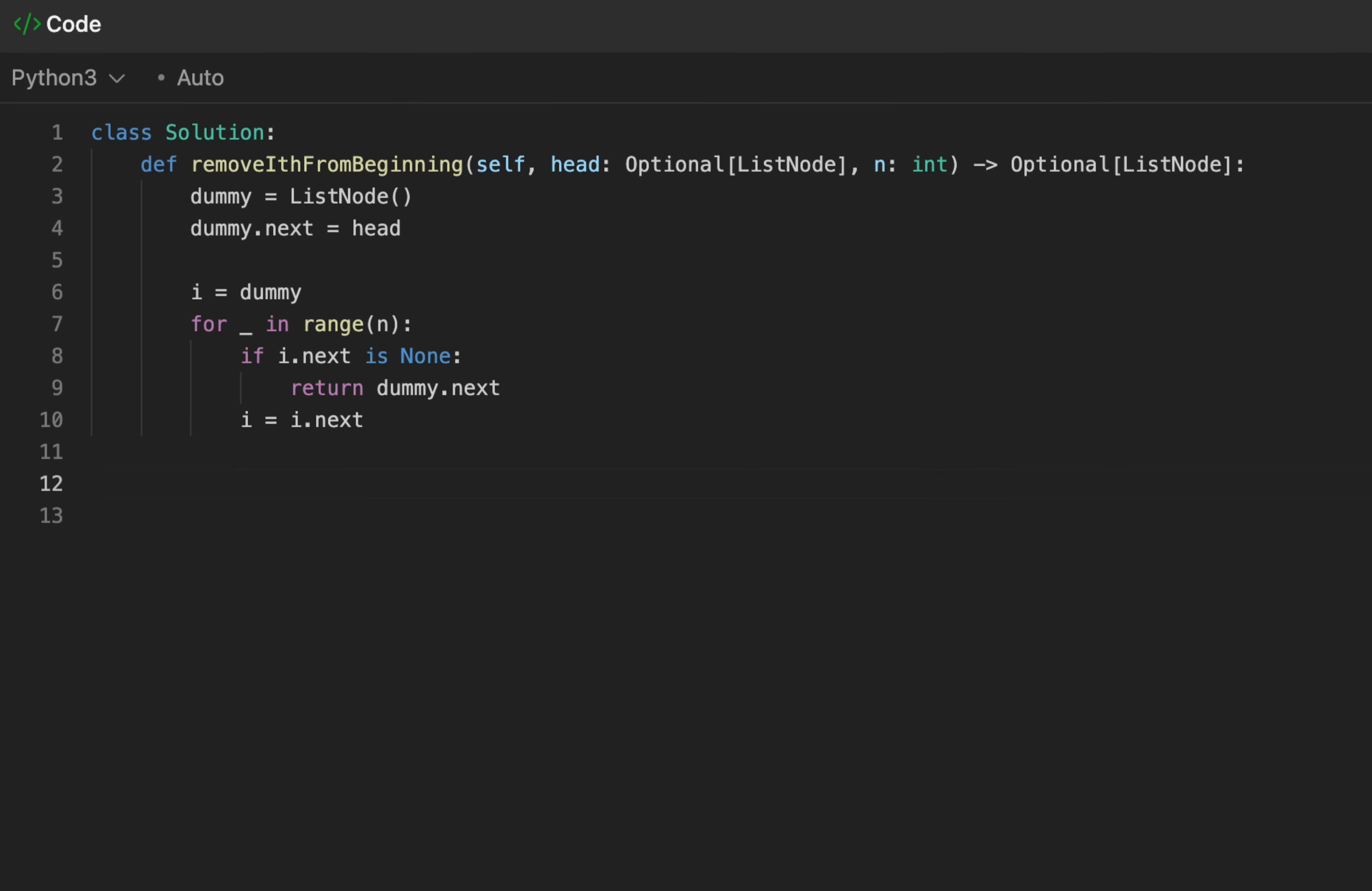After the loop, think back to the second edge case. What if the next node is null? We do the same thing, we return dummy next. If not, we have our ordinary case, where we'll do i next equal to i next next. Return dummy next as the last thing to do, and that is it.